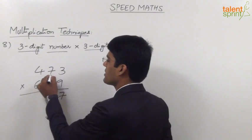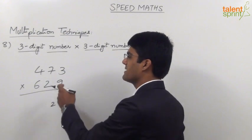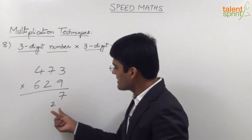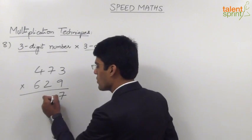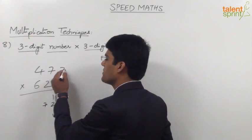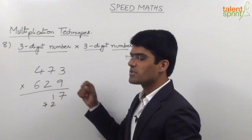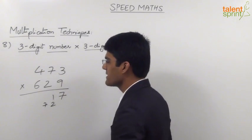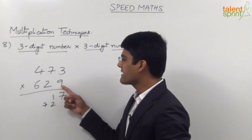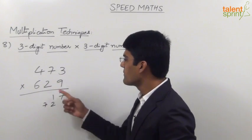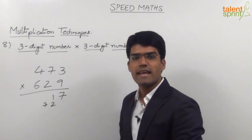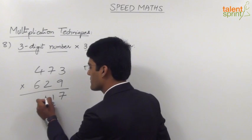Step two: cross multiplication of units with tens — 2 into 9 is 18... wait, 6 into 9 is... let me recalculate: units cross tens gives 2 into 9 is 63 and 2 into 3 is 6; 63 plus 6 is 69, plus carry 2 is 71. Take 1 in the answer and carry 7. Step three: cross multiplication of units with hundreds and tens multiplication — 4 into 9 is 36, 6 into 3 is 18, 7 into 2 is 14; 36 plus 18 is 54, plus 14 is 68, plus carry 7 is 75. Take 5 in the answer and carry 7.